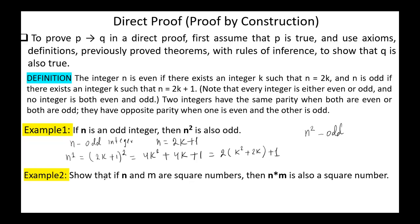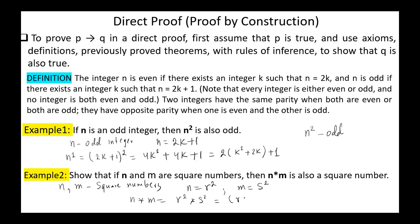Example 2: Show that if N and M are square numbers, then N multiplied by M is also a square number. We start by assuming both N and M are square numbers. This implies that N equals R squared and M equals S squared. So N multiplied by M equals R squared multiplied by S squared, which equals (R multiplied by S) squared. Hence, proved.